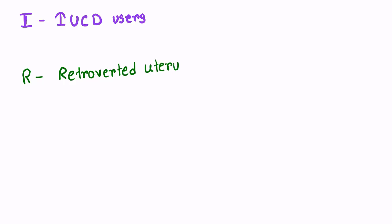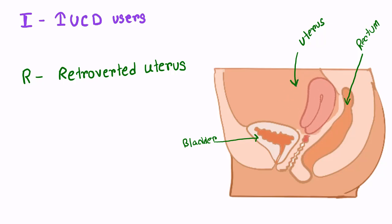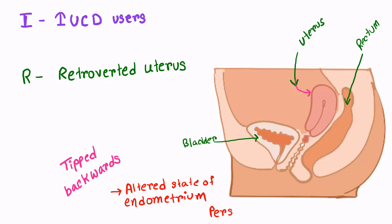R is for retroverted uterus. In the picture of a normal uterus, the urinary bladder is in front and the rectum is behind. A retroverted uterus means the uterus is tipped backwards so that it aims towards the rectum instead of forward towards the belly. Menorrhagia is common in this condition due to an altered state of the endometrium and persistent edematous Graafian follicle. As the Graafian follicle is persistent, there is an increased amount of estrogen, which causes proliferation of the endometrium and results in heavy bleeding.